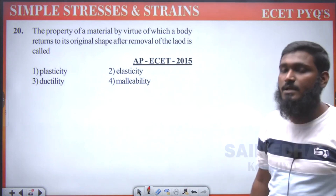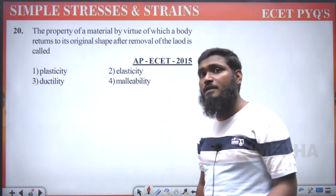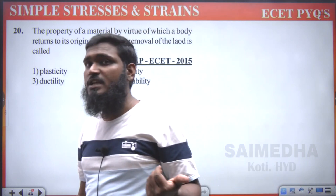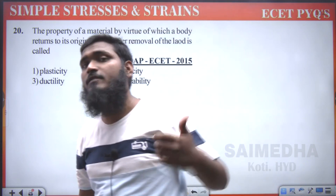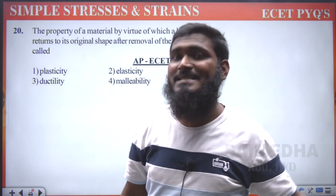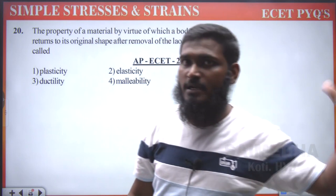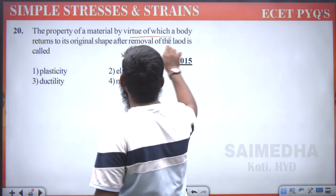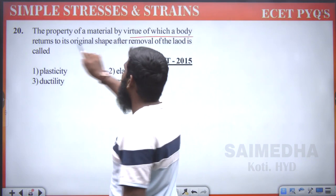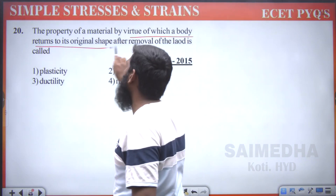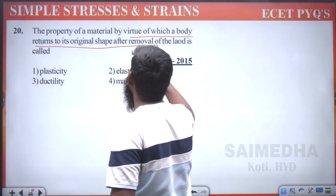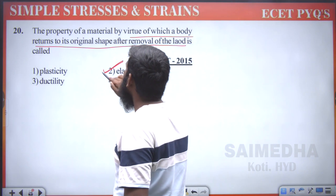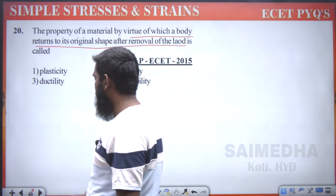We call it elasticity. Similarly, after removal of the load, if it does not have the capability to regain its original shape and size, that comes under plasticity — permanent deformation. But what is given here: the property by virtue of which a body returns to its original shape after removal of the load — we call it elasticity. Option 2 is correct.